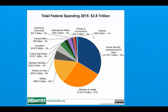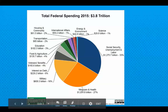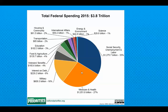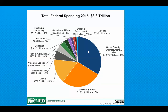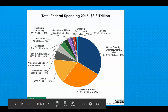Here is what the federal government spends its money on. We've got Social Security and unemployment, Medicare and health, military, and interest on the debt. This is from 2015, so it's a couple years old, but probably pretty close. One thing to be aware of is that only a portion is where politicians get to choose how much they spend — the rest is already decided for them.